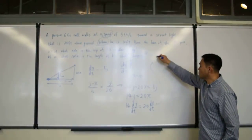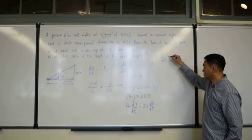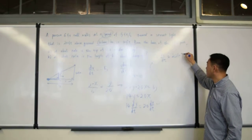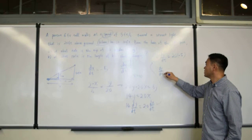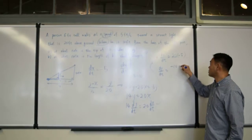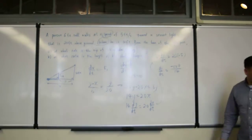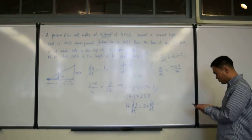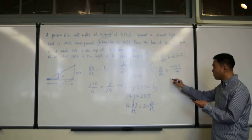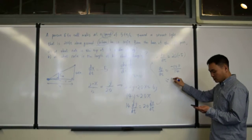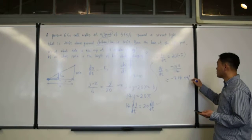So, 14 times dy/dt equals 20 times negative 5, which is negative 100. And therefore, dy/dt is negative 100 divided by 14. If you use a calculator, 100 divided by 14 is 7.14. So, this is about negative 7.14 feet per second.